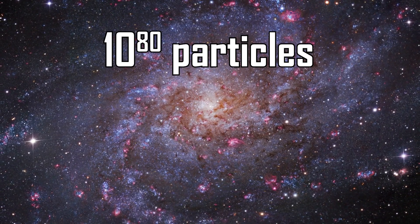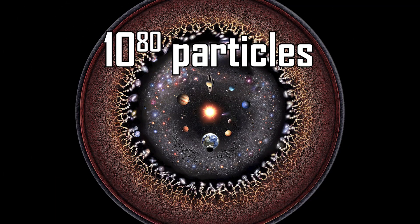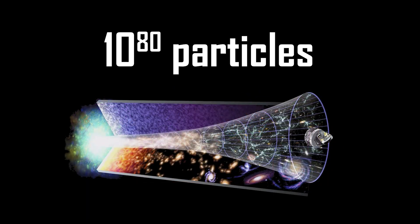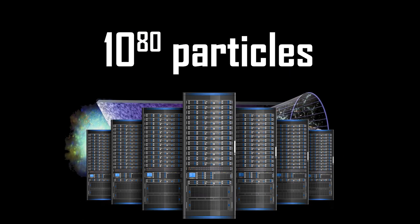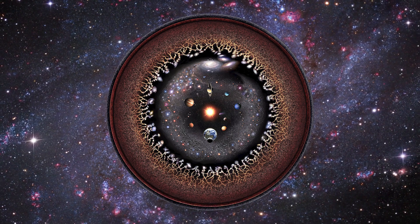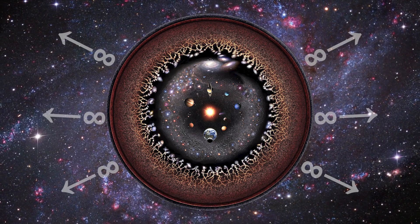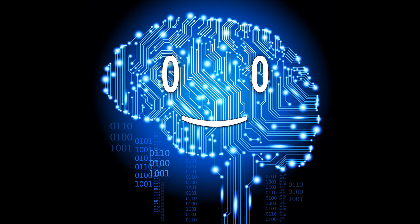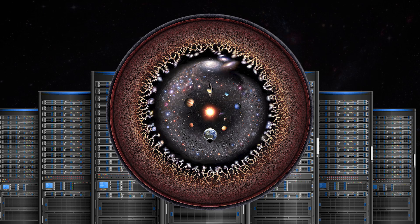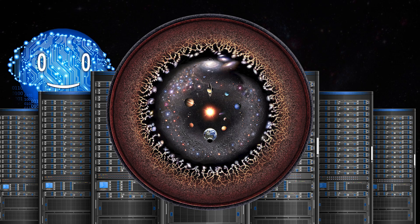To know every single property of every particle out of the 10 to the 80th power particles in our observable universe, and all the interactions between them at every instance of time, you would need a very large storage system for information. And we're not touching stuff outside the observable universe which quite possibly spans to infinity. But even if we did have this storage device, which would have to be way bigger than the observable universe itself, there is one crucial problem.